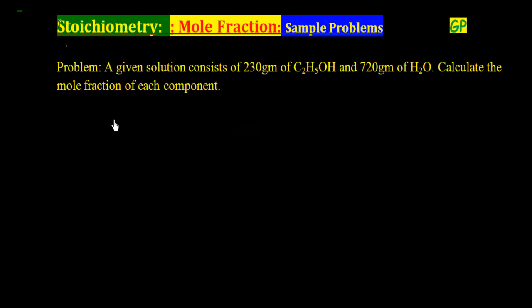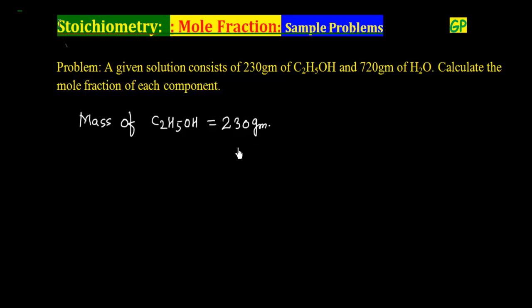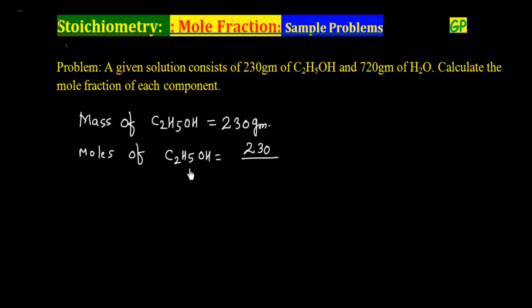The mass of ethyl alcohol (C2H5OH) is given as 230g. We can calculate the moles of C2H5OH using weight divided by molecular weight. The molecular weight is 46, calculated as 12×2 plus 5 plus 16...